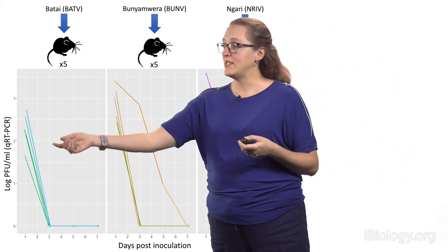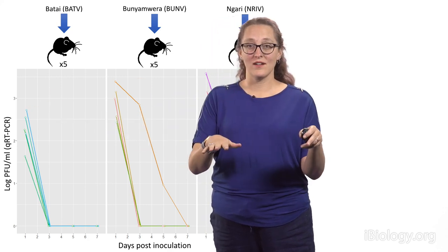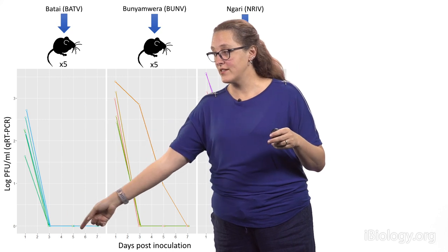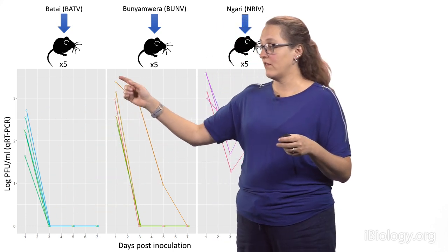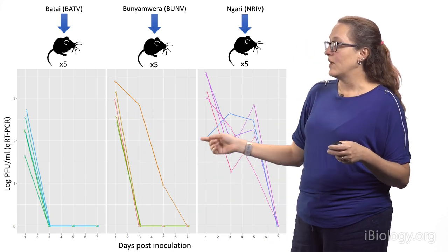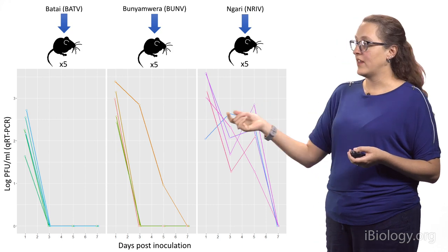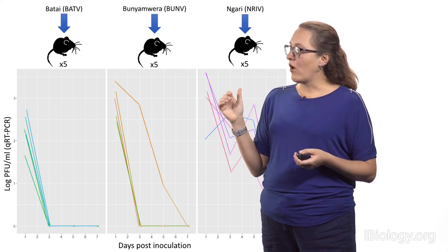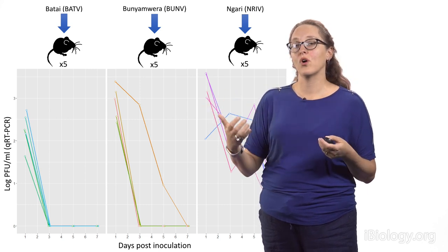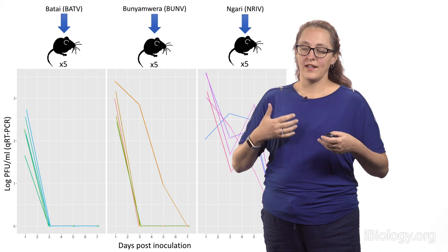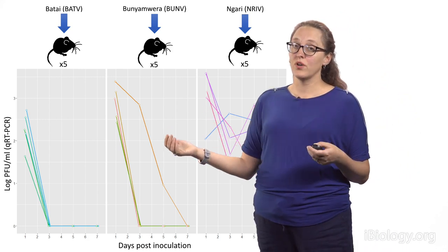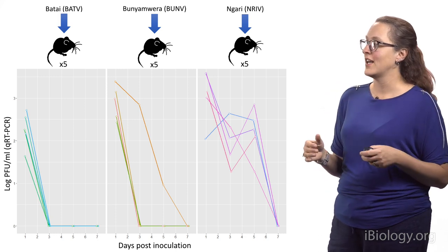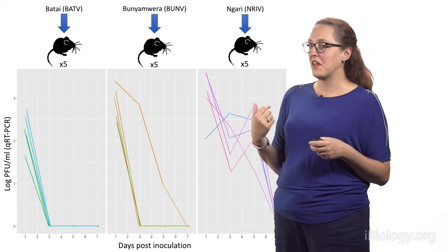With batai and bunyamwera, the detection of virus at day one is probably the same virus we put in — it's not replicating, it's not progeny, it was just still there. The virus was cleared out of these mice very quickly. Ngari showed a little bit more variability than the parental strains, which was an interesting find that may or may not have significance. We hark back to reports of ngari having more of a severe manifestation in human populations, but that's based on limited reports and limited study of these viruses, so we don't want to say definitively that this is a thing.